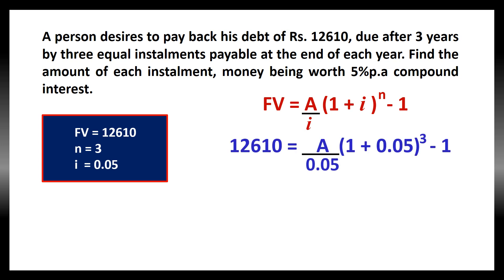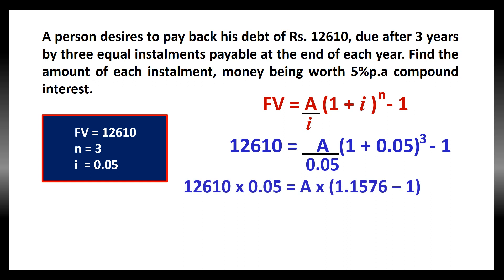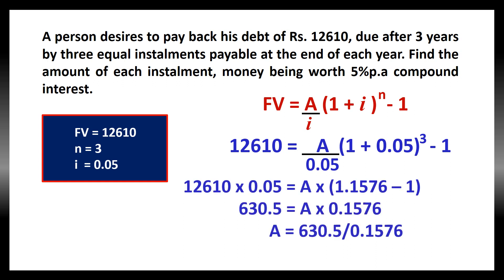Applying the values: 12,610 = (A / 0.05) × [(1 + 0.05)^3 − 1]. Here, A is to be found out — every year, what amount is to be paid is not given in the question, so we have to find A. When we compute it, we get A as 630.5 divided by 0.1576, which equals 4000 rupees. So, every year he has to pay 4000 rupees for the next 3 years, so that after 3 years the value will be 12,610.